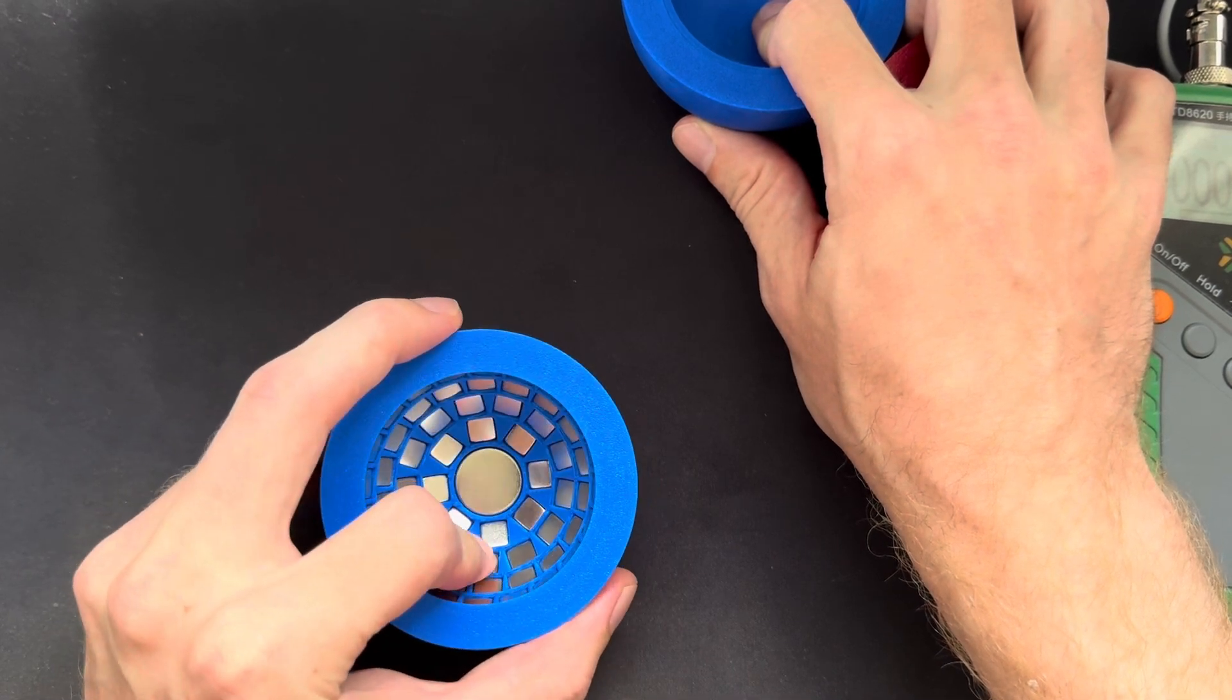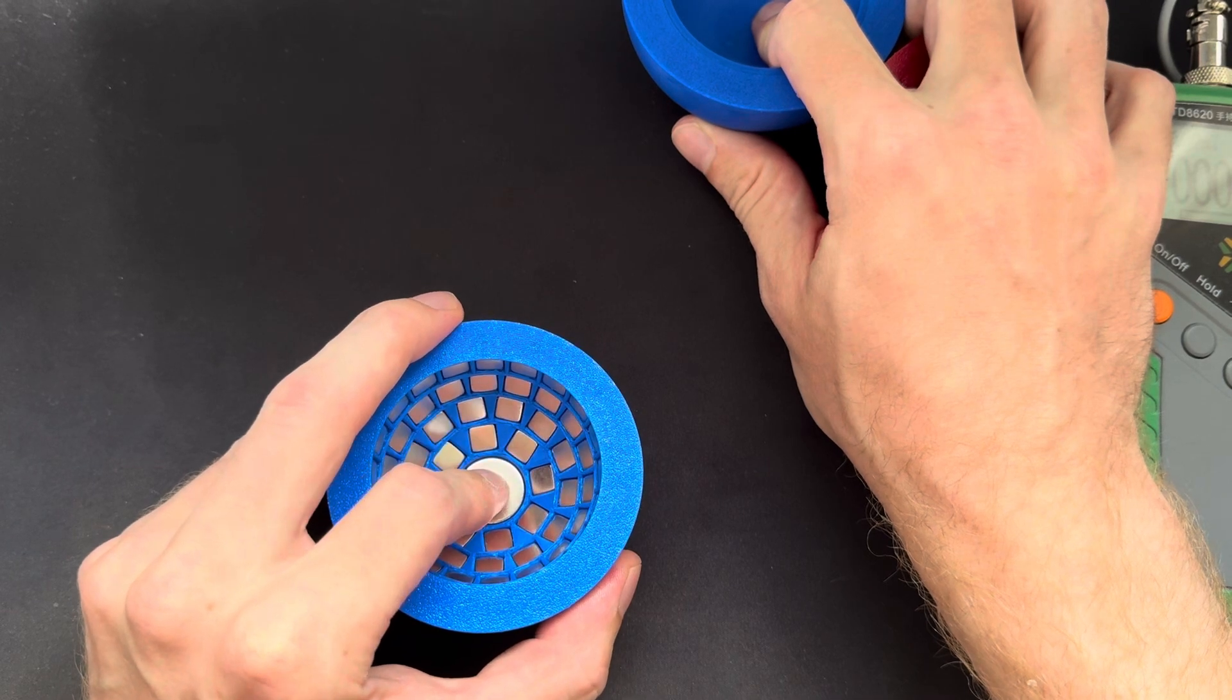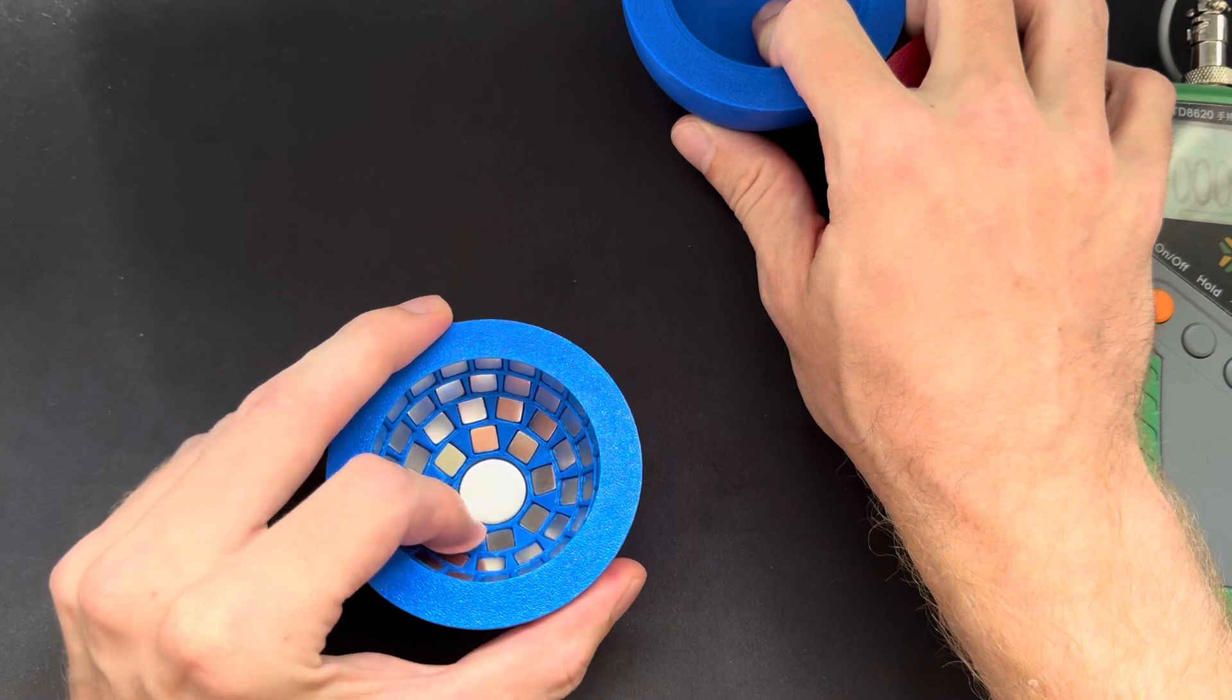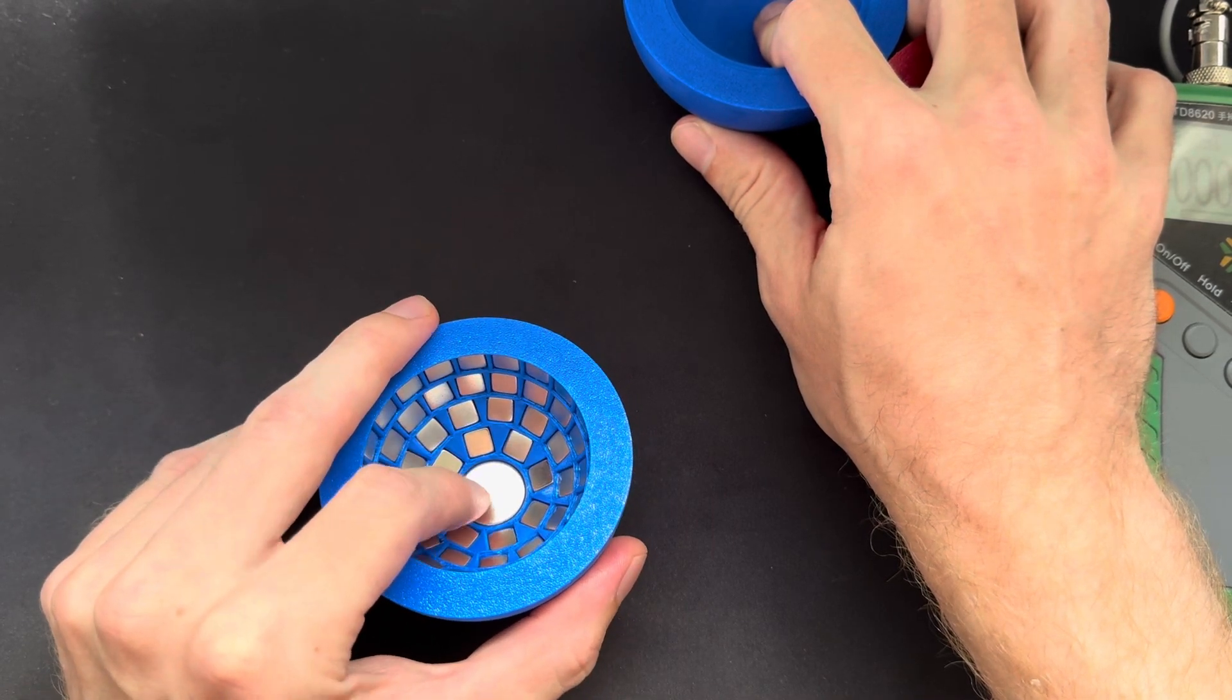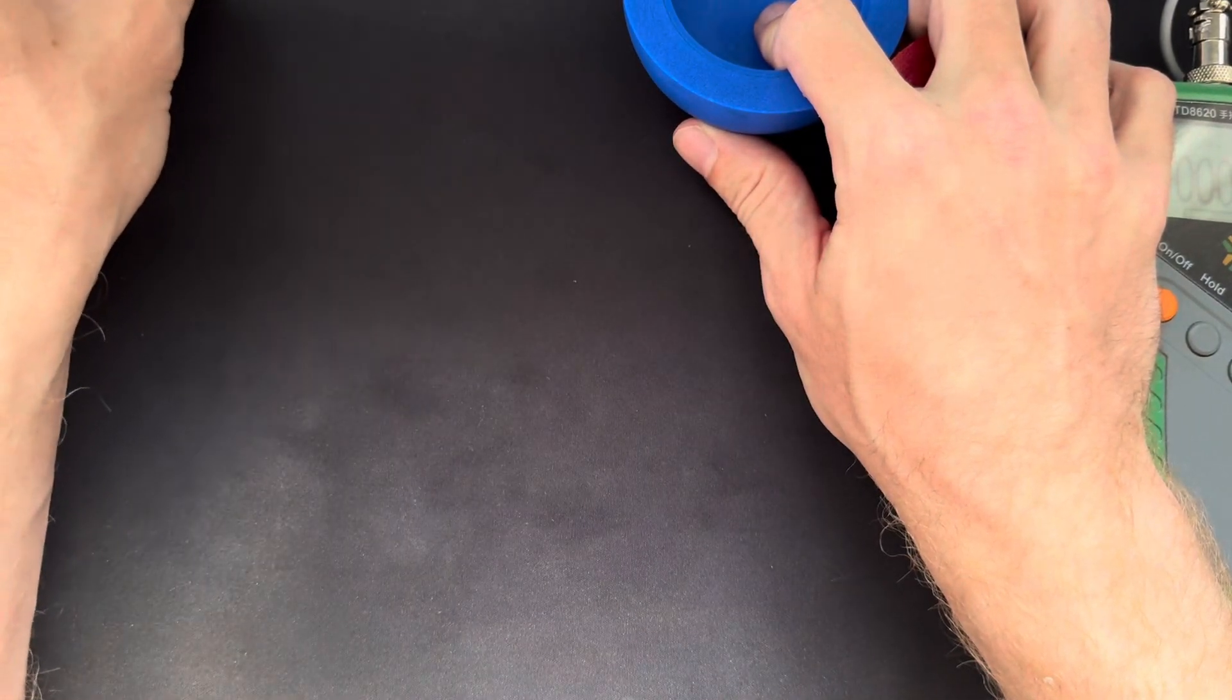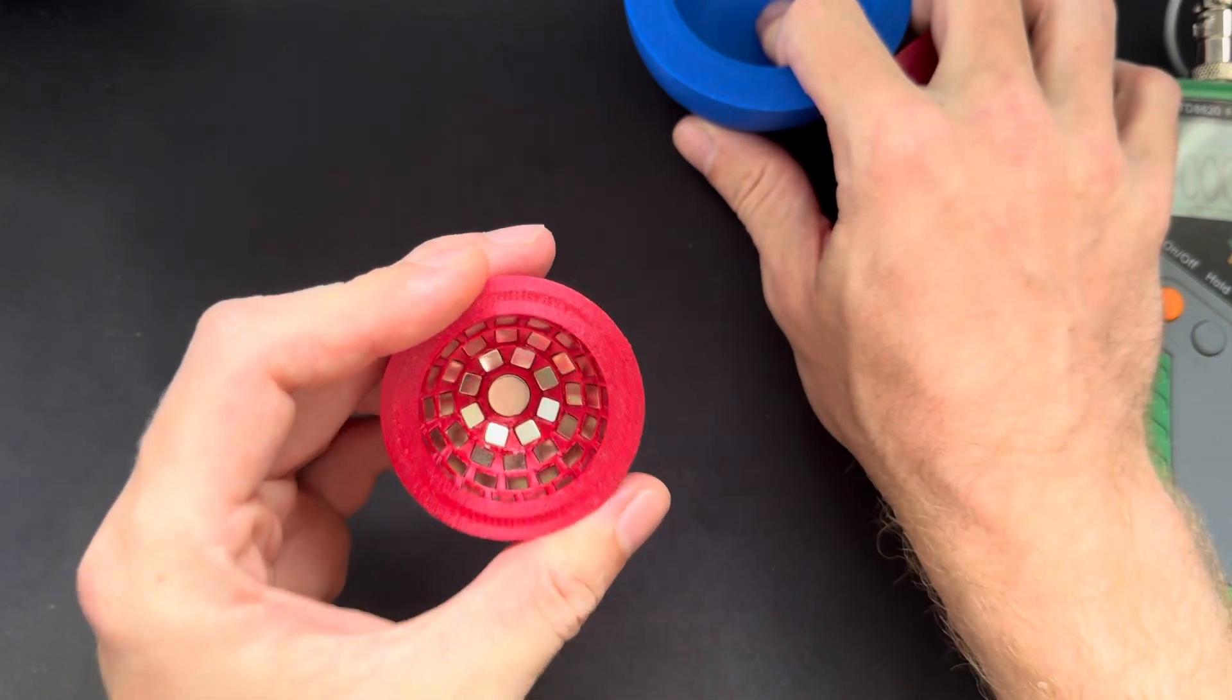When you assemble them start with this disc magnet in the center first and then work yourself around from starting from the inner magnets to the outer ones. This is the easiest way to assemble them and take your time. And maybe if you've never assembled one of these start with the small ones because they are easier.